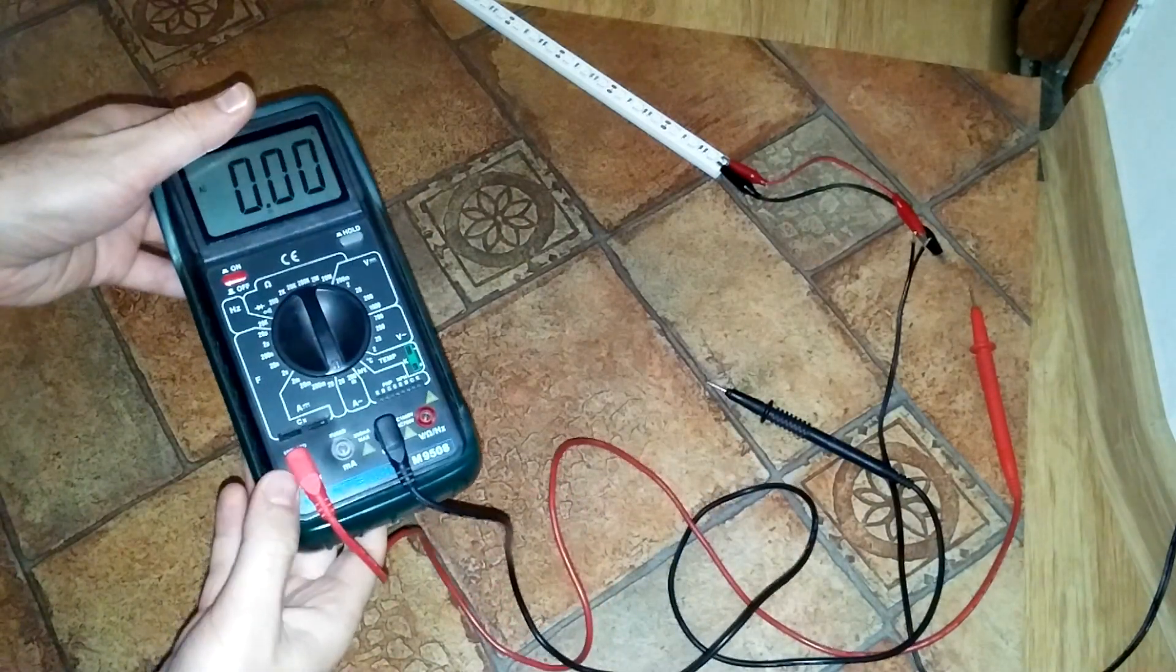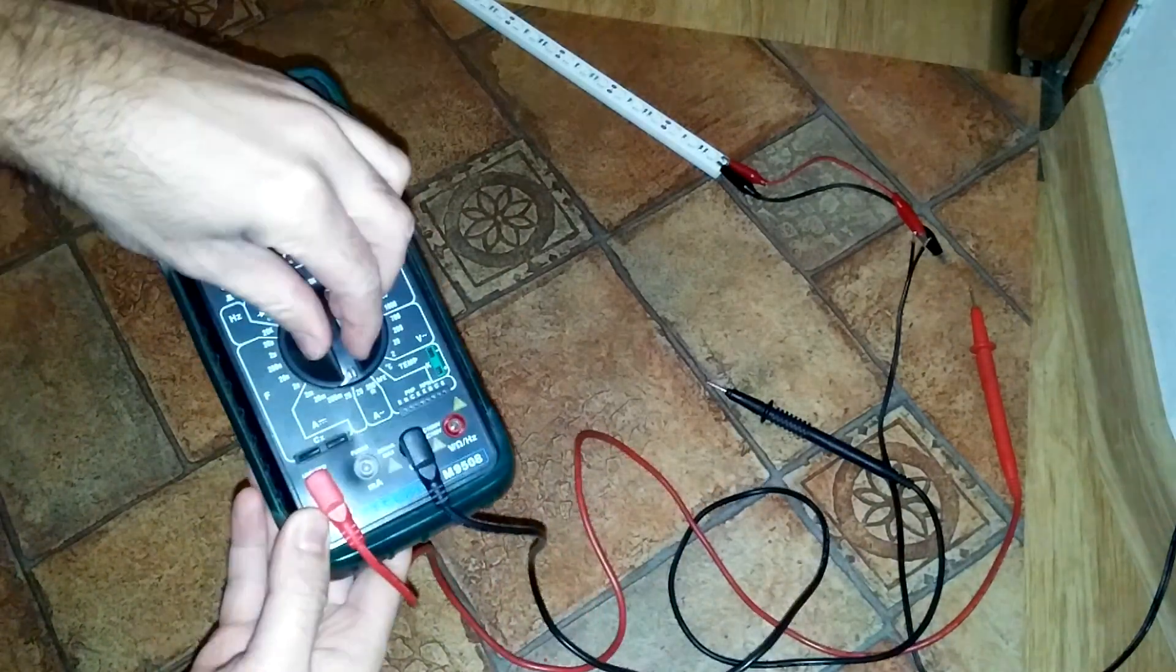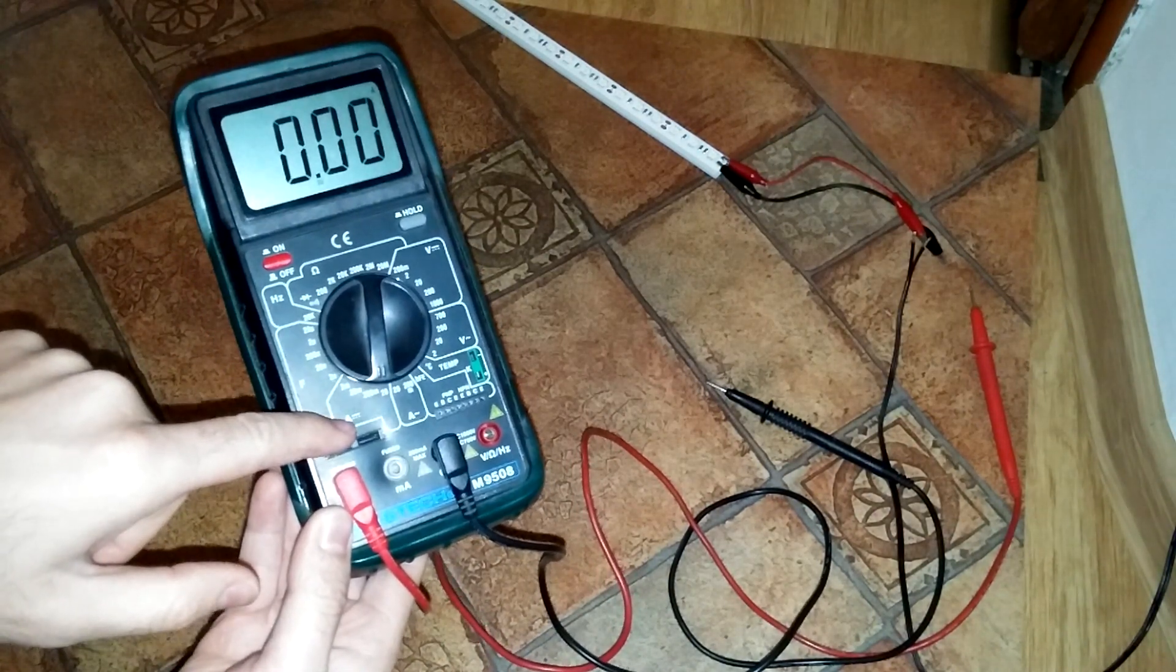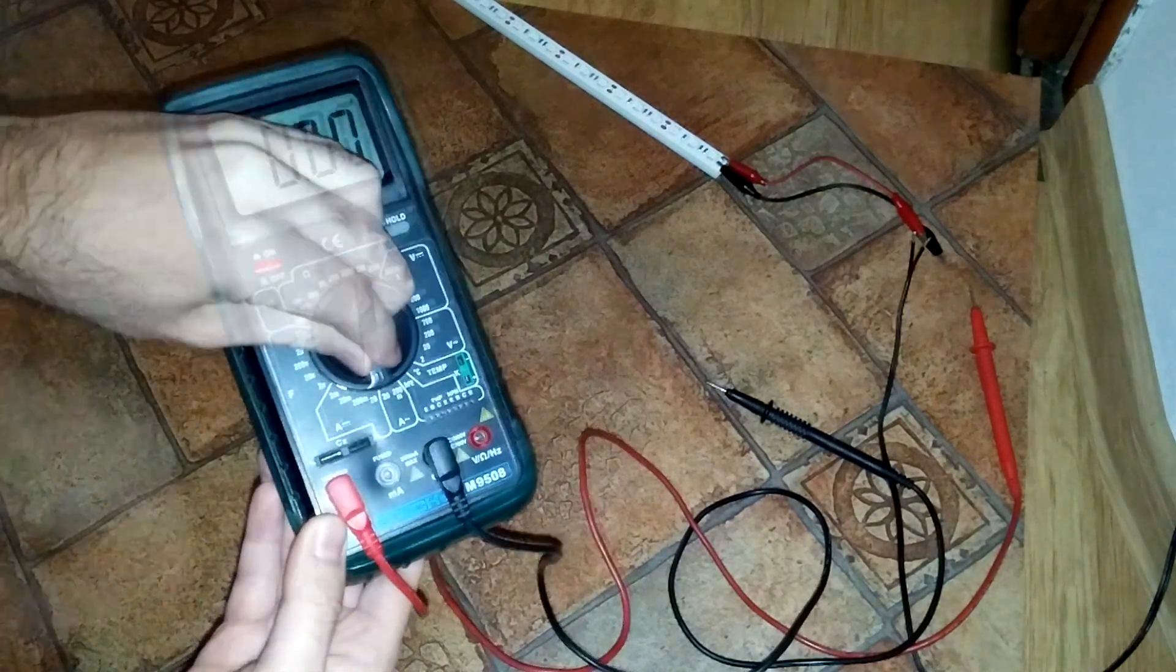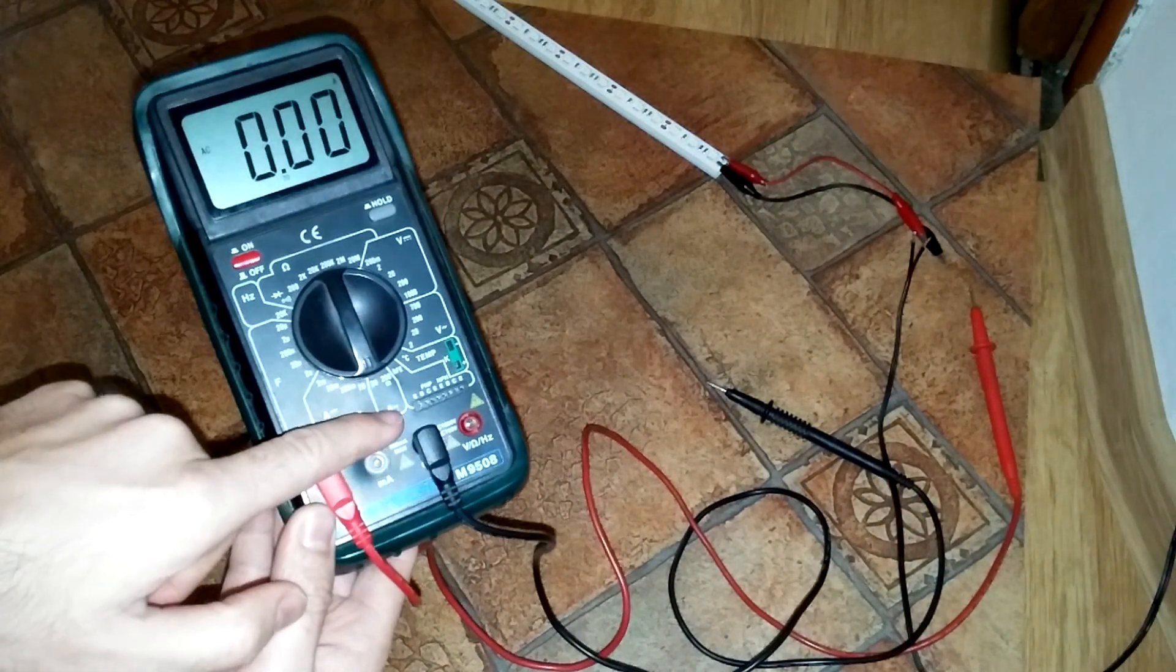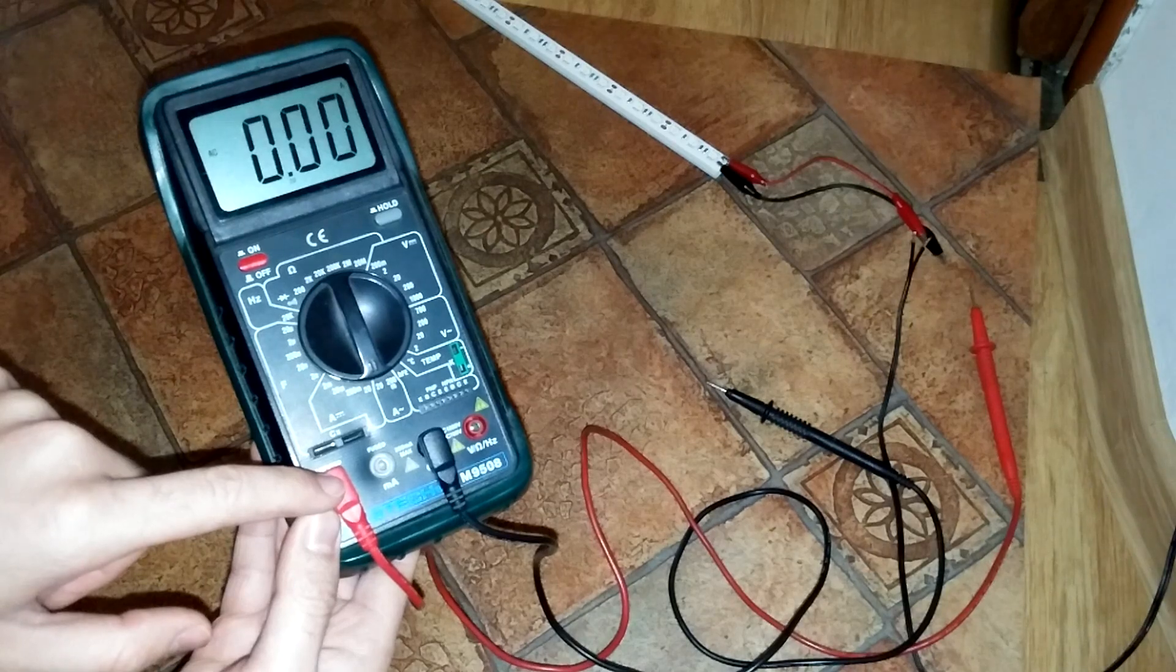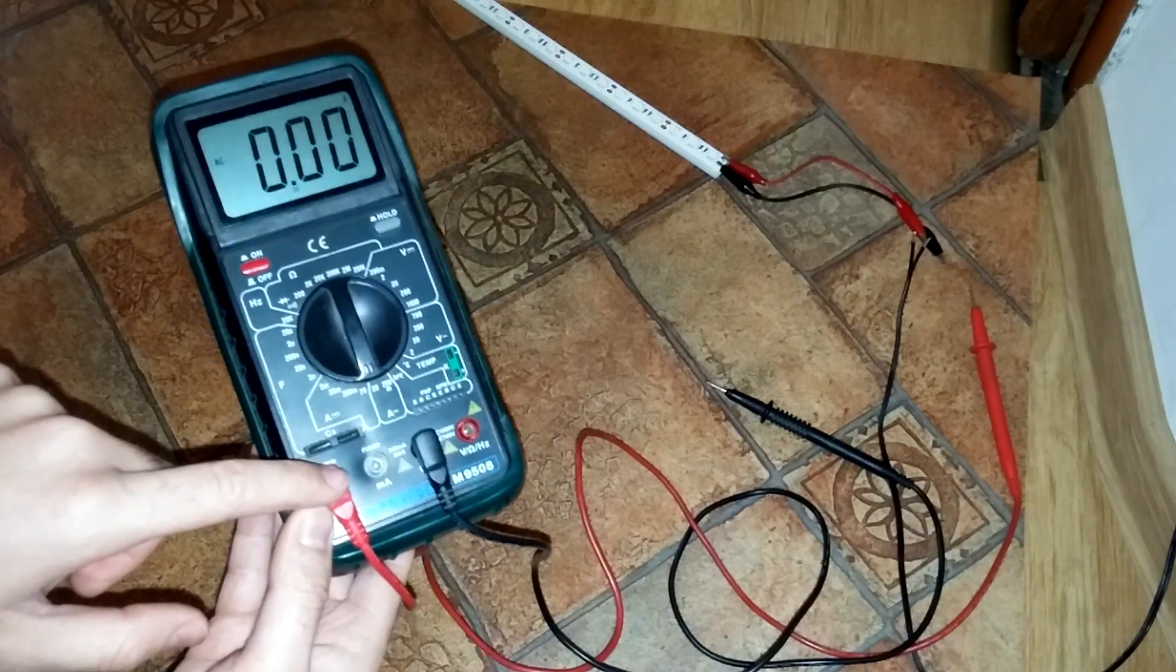Okay, now we are measuring AC amps. So instead of this one which was DC and 20, now I move there to AC and the 20 scale. And this one the red is also here at the left part.